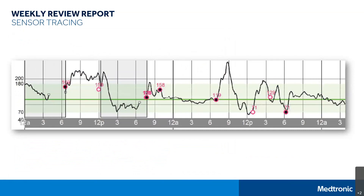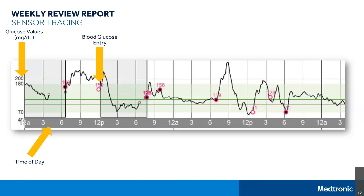The sensor tracing on the Weekly Review Report allows you and your healthcare provider to identify trends that might be occurring throughout the week as your glucose values rise and fall. The sensor is taking your reading every five minutes, and those readings are used to form this trend line. The bottom gray bar of the graph displays the time of day. The left-hand side shows the glucose values in milligrams per deciliter. The numbers on the graph along the trend line correspond to a blood glucose entry, which displays as a white circle. Any circles with a black dot represent a calibration that also occurred at the time of testing.